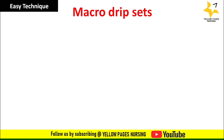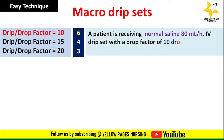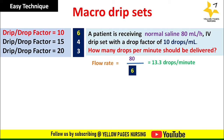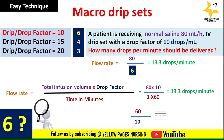One more example: a patient is receiving normal saline 80 ml per hour using an IV set with a drip factor of 10 drops per ml. How many drops per minute should be delivered? Flow rate = 80 ÷ 6 = 13.3 drops per minute. Applying the regular formula also gives 13.3 drops per minute. The number 6 was obtained by dividing 60 minutes by drop factor 10.